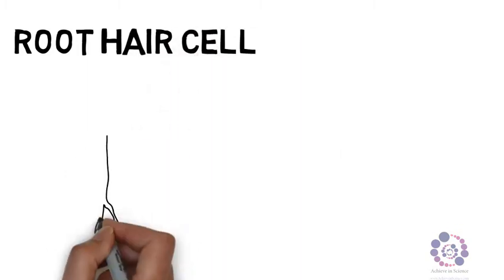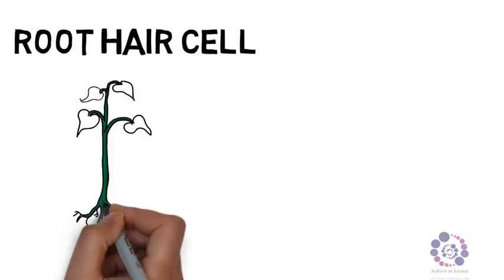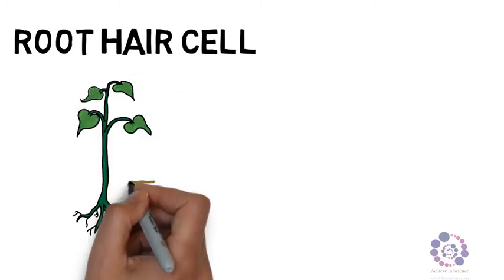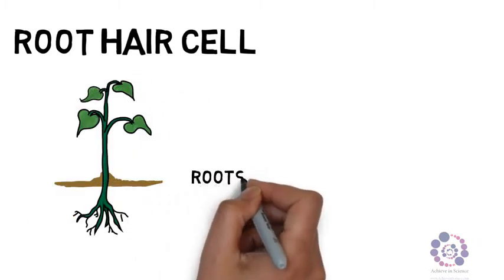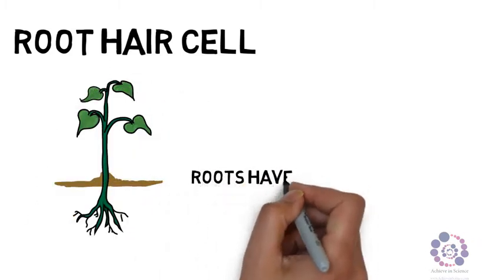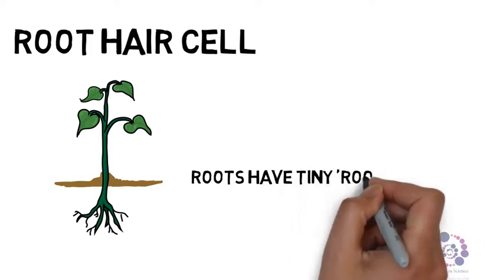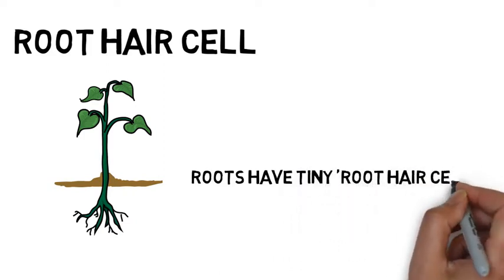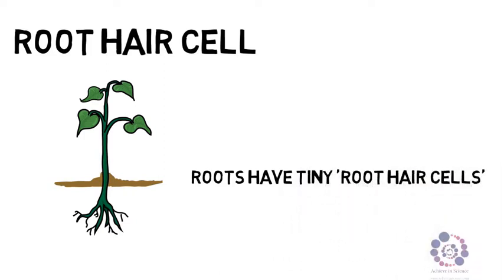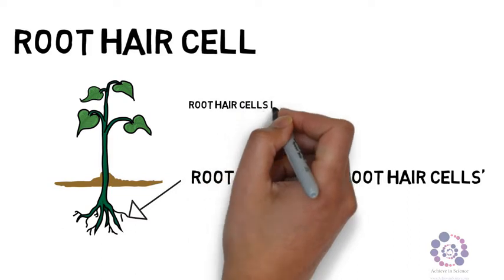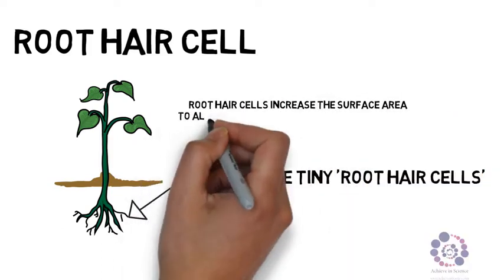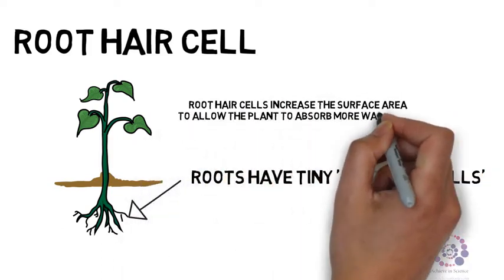The next cell we're going to look at is the root hair cell, found on a plant this time. Roots have tiny little hairs on the ends of them known as root hair cells. These root hair cells provide a greater surface area so the plant is able to absorb as much water and minerals as it possibly can from the surrounding soil.